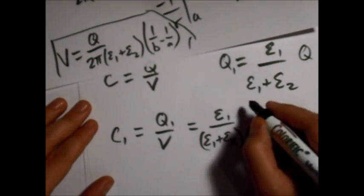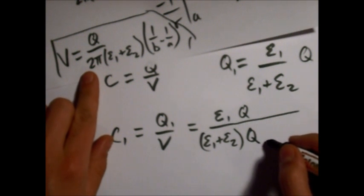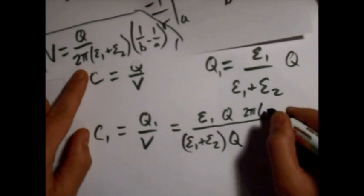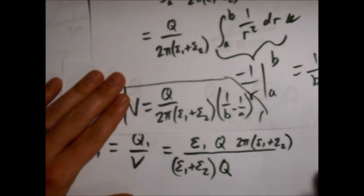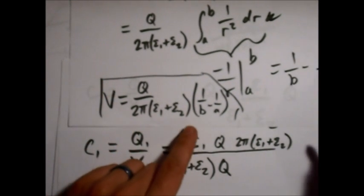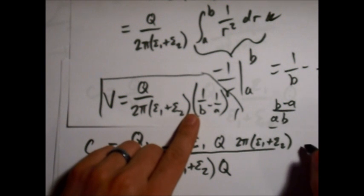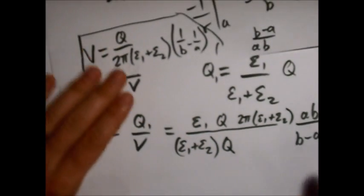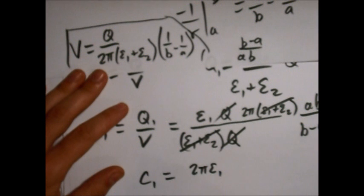Okay. And then, the v is going to be q, and then the 2 pi going just down from this v that we did before. And then, let's write this out real quick. So, b minus a over ab. So, here it will be an ab over b minus a. This will cancel with this. This will cancel with this. And so, c1 equals 2 pi epsilon 1 times ab over b minus a.